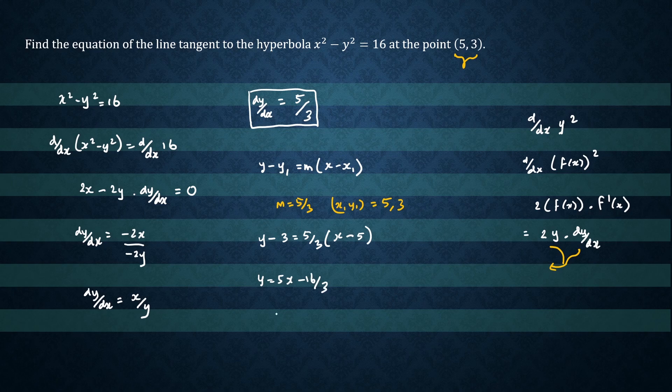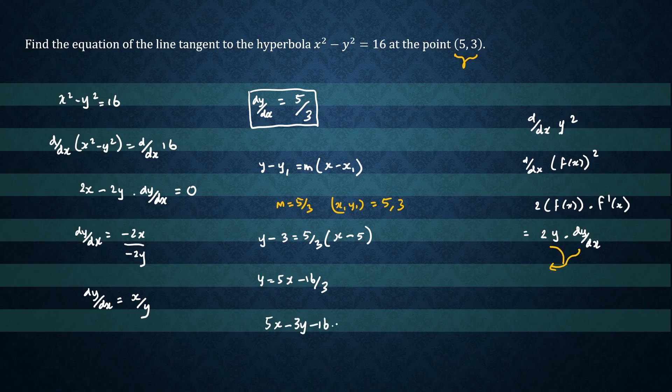In general form, we can write 5x minus 3y minus 16 equals 0.